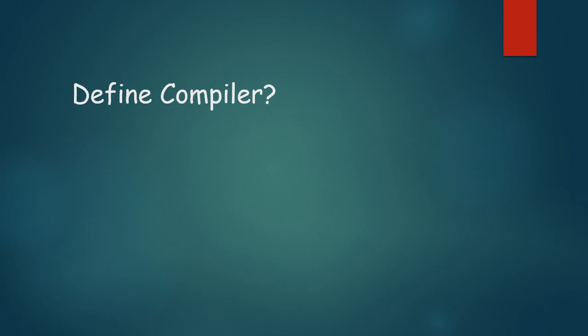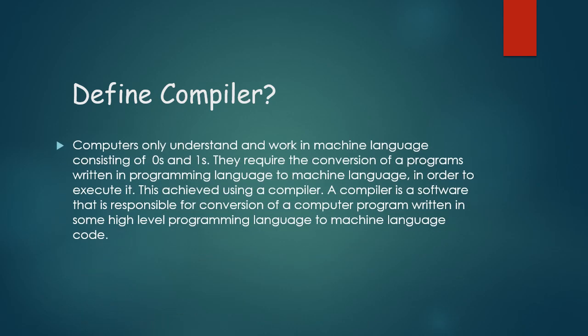Programs we write are in high-level language, but computers only understand machine language, consisting of zeros and ones. They require conversion of programs written in programming languages to machine language in order to execute them. A compiler is a software responsible for converting a computer program written in a high-level language to machine language code.